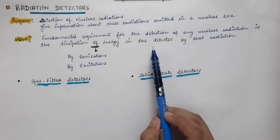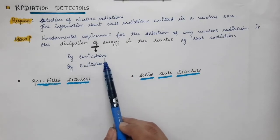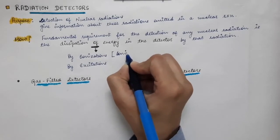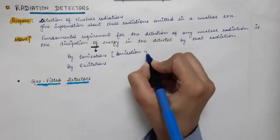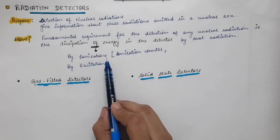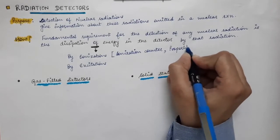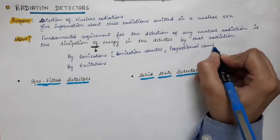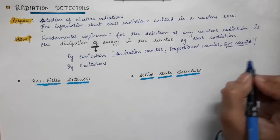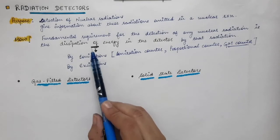Ionization means the atoms of the medium of the detector are divided into a positive ion and an electron. Dissipation of energy can be in two forms: the first is ionization, which occurs in the case of ionization counters, proportional counters, and GM counters. The GM counter is a very important topic, and in the case of the GM counter, ionizations also occur in the medium of the detector.